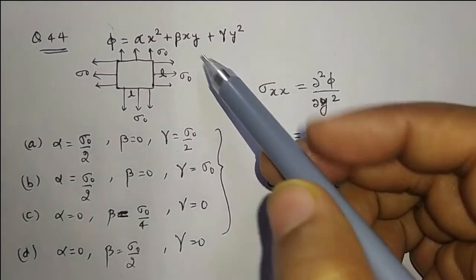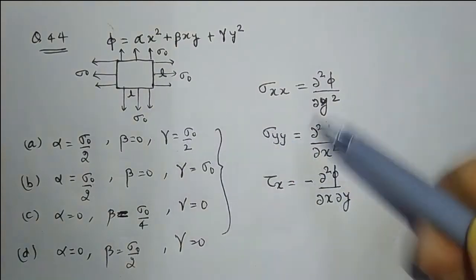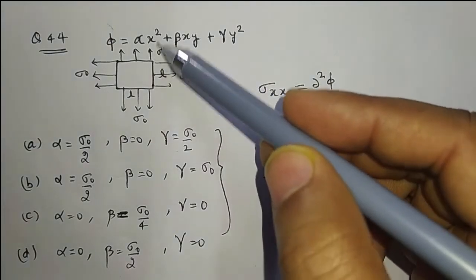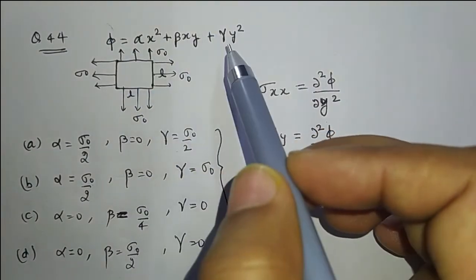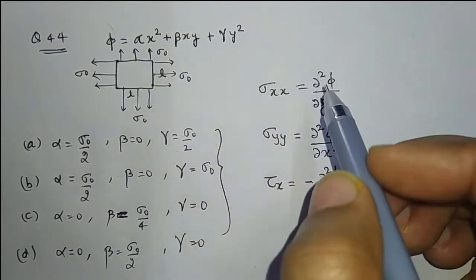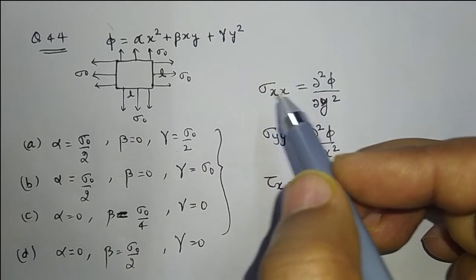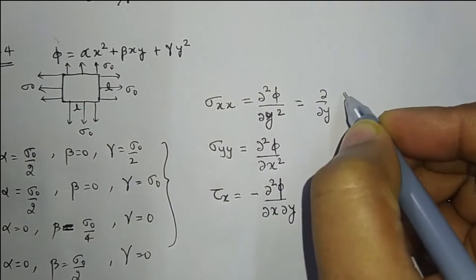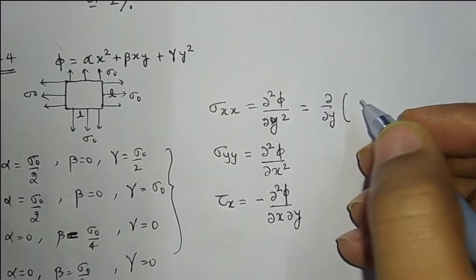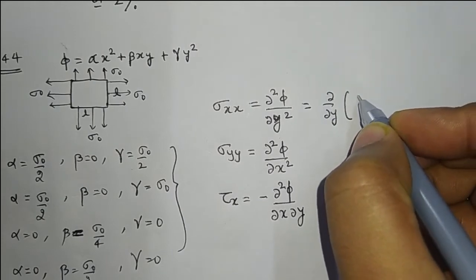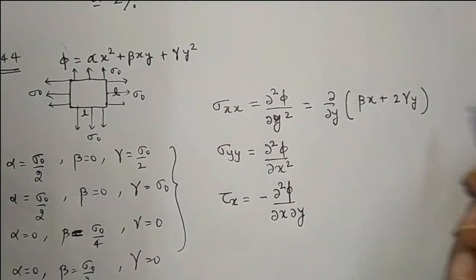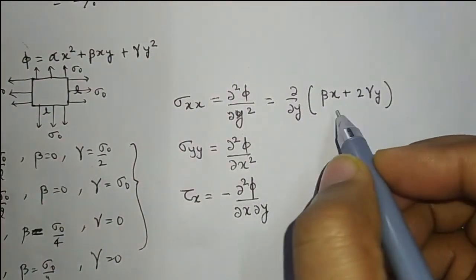Since the shear stress is zero, σₓ = σ₀ and σᵧ = σ₀. We differentiate the Airy's stress function twice to get the stress in the x-direction. After the first differentiation we get βx + 2γy, and differentiating again with respect to y we get 2γ.